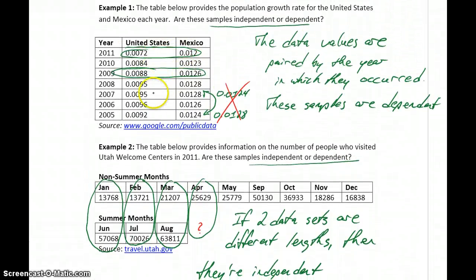If they do have the same length, like we had in example one, then you want to check to see is there something that pairs those values together. In this case in example one, they were paired by the year in which they occurred. Other examples would include if we're testing or collecting data on a husband and wife, or a father and son, mother and daughter. There's some relationship that connects the two people that we want to keep together.